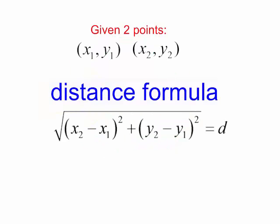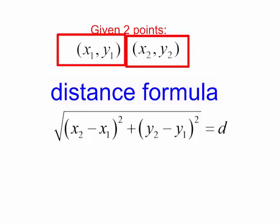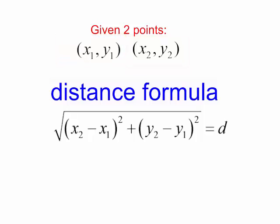Let's also review the distance formula. If I'm given two points, x sub 1, y sub 1, and a second point, x sub 2, y sub 2, the distance between those points is the square root of x sub 2 minus x sub 1, in parentheses, squared, plus y sub 2 minus y sub 1, in parentheses, squared.